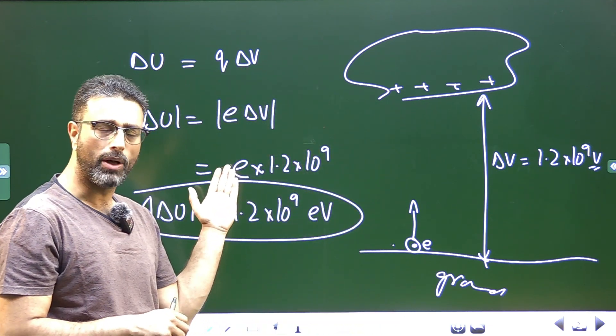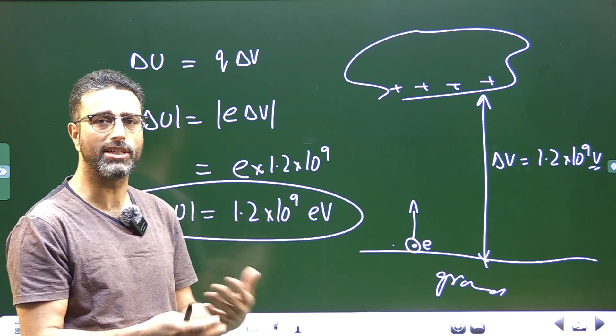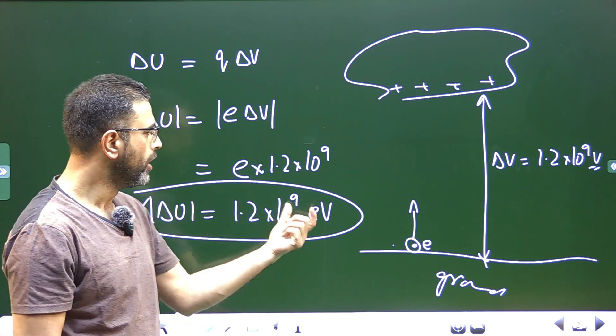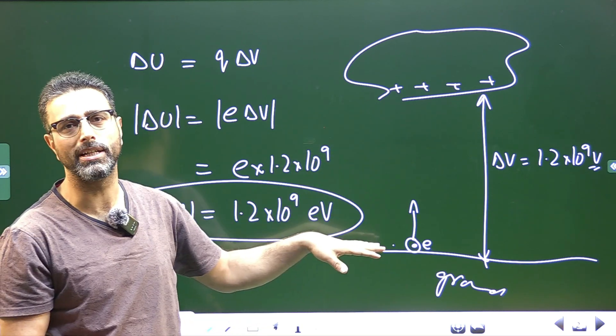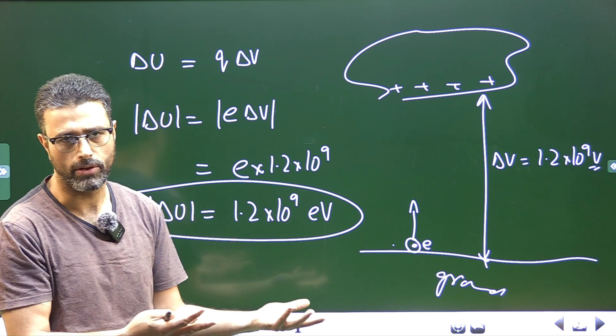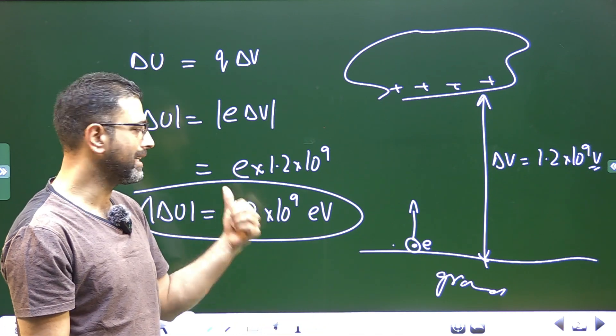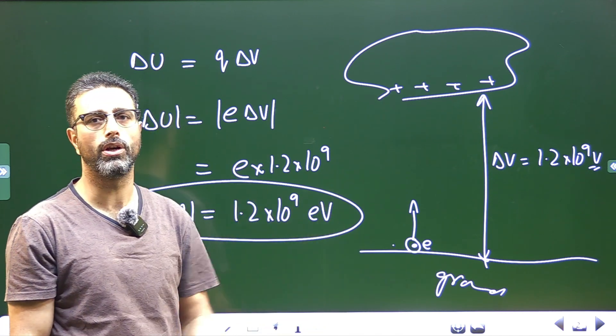If you substitute the value of E, 1.6 into 10 to the power minus 19 coulomb, you will get joules here, then to convert that to electron volts, you again have to divide by same E. So it is the same thing. So keep E like that, the unit automatically becomes electron volt.